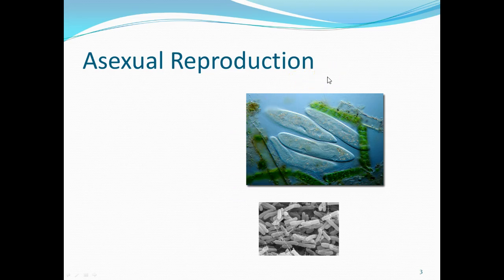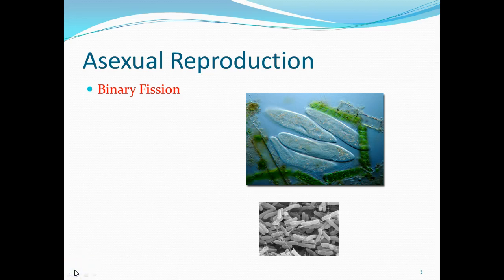We're going to talk about different forms of asexual reproduction, getting more and more complicated as we go. The first type, besides mitosis, would be binary fission. When a cell like an onion root cell or a skin cell undergoes reproduction, we call that mitosis, because those are eukaryotic cells with a nucleus.